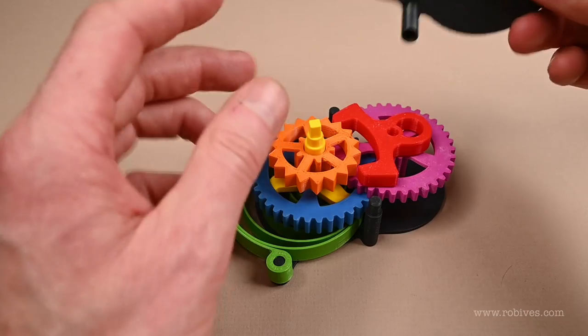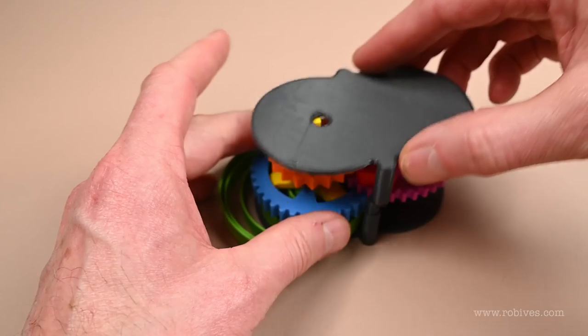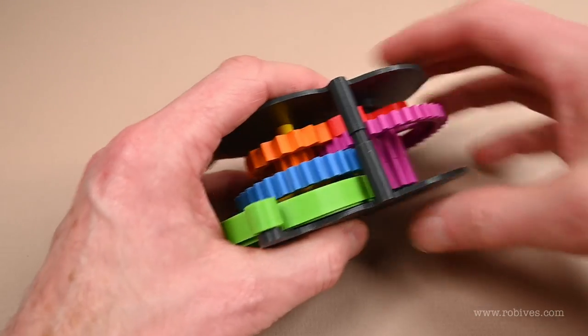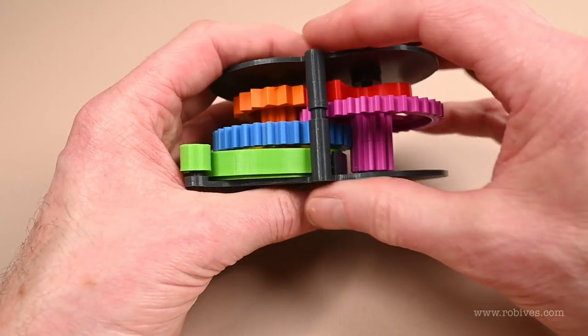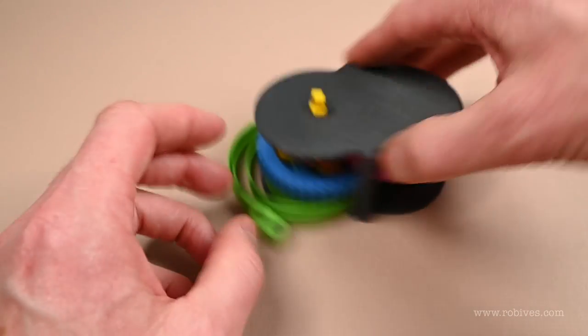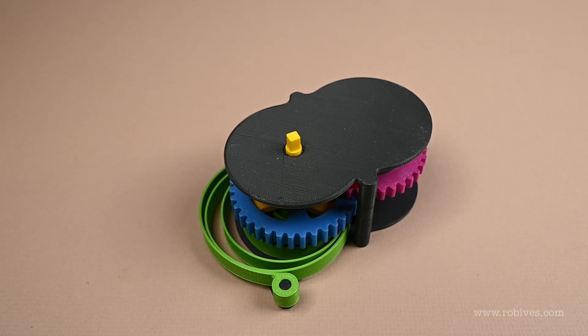And then the top goes over everything. So we've got a pin there and a hole there. The winder goes through the hole, the pin goes into the fork. These two just push together by friction. That seems to work. And then if I find the key and wind it up and give it a go.